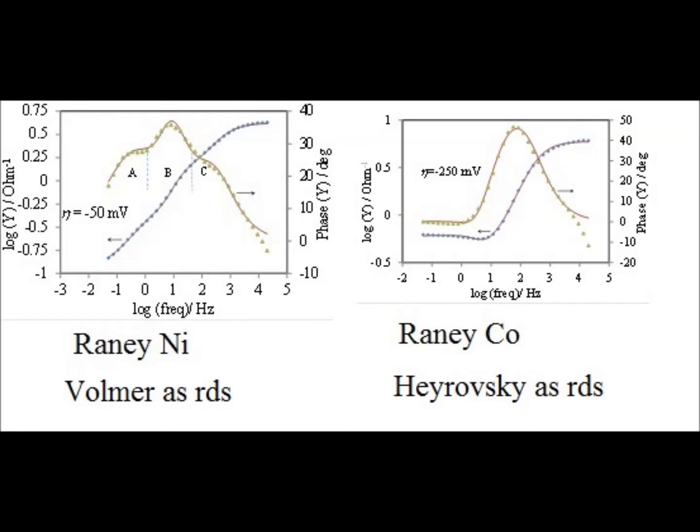However, the rainy cobalt sample has an area of the red curve where the phase is slightly negative. For this sample, both Volmer and Heyrovsky steps are rate determining.